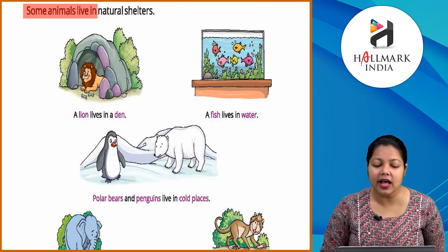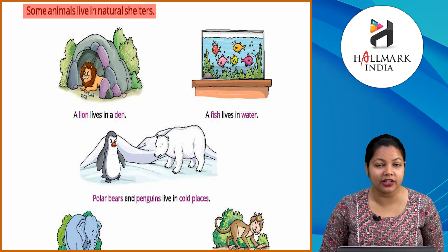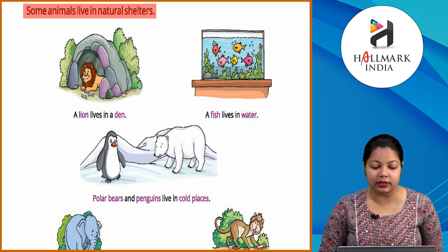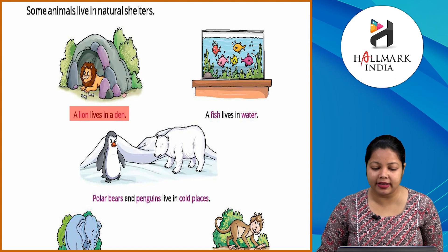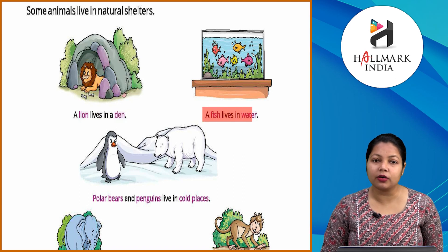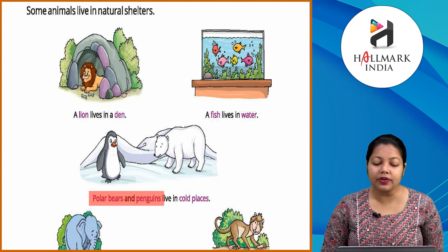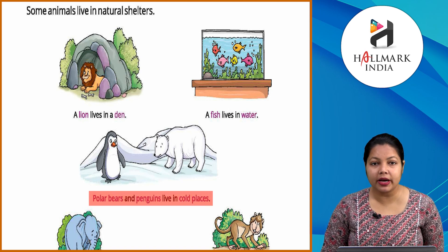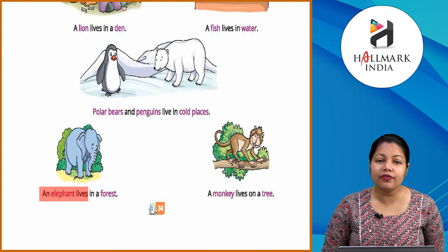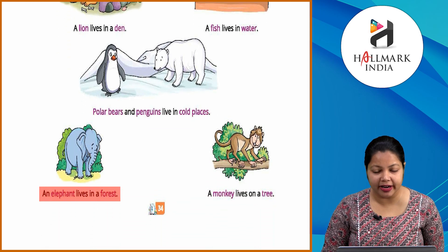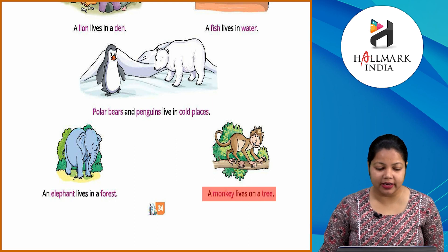Some animals live in natural shelters. Kuch animals natural shelters mein rehte hain jinhe khud ke liye shelter banane ki zarurat nahi — jaise a lion lives in a den. Lion ek den mein rehta hai. A fish lives in water. Polar bears and penguins live in cold places. An elephant lives in a forest. A monkey lives in a tree.